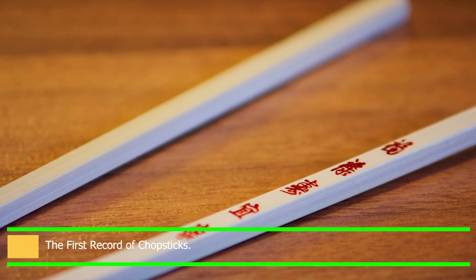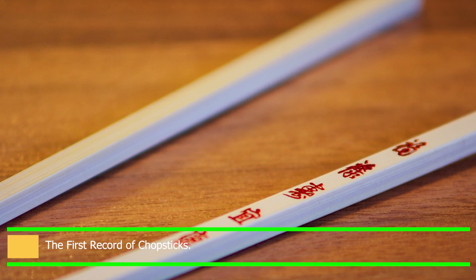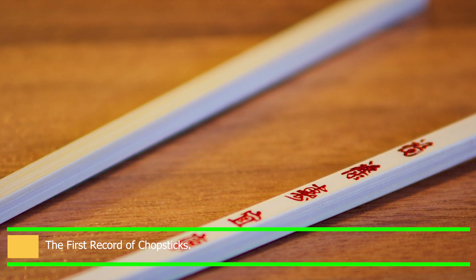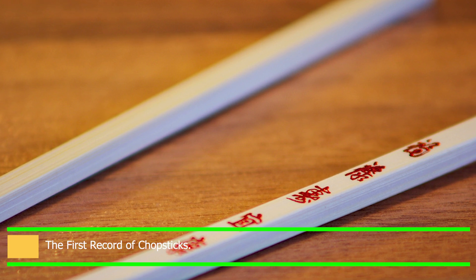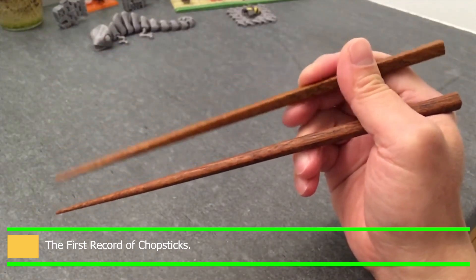Chopsticks were first employed as cooking implements more than 5,000 years ago in China, where they were created. It is believed that the first chopsticks were constructed of wood and were thin twigs used to pull food out of a cooking pot.